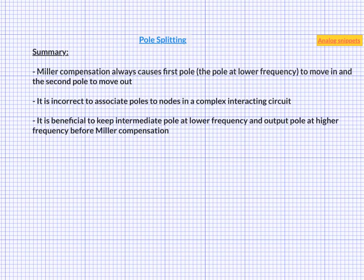For one, Miller compensation is only effective till the second stage has gain. So, bandwidth of second stage puts an upper limit to achievable bandwidth after compensation.